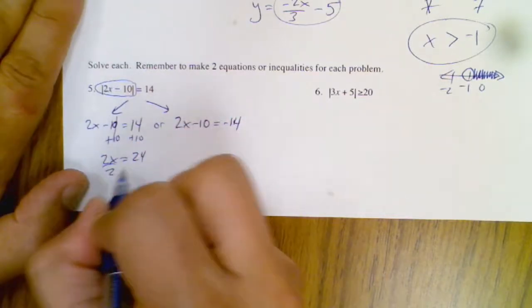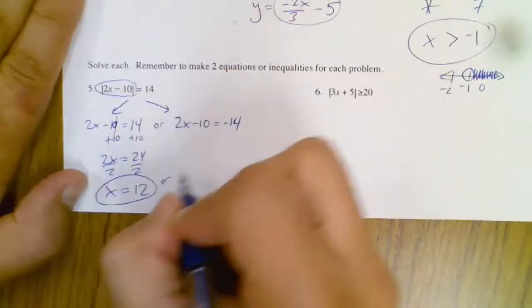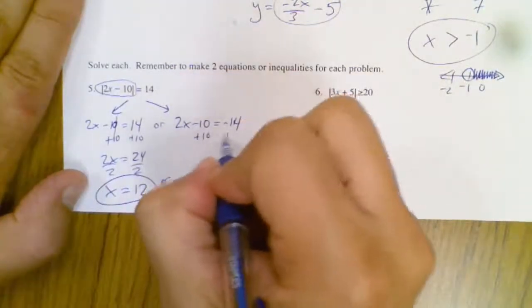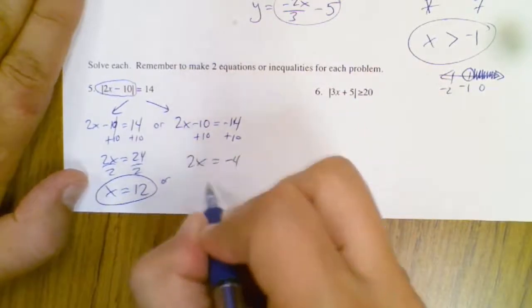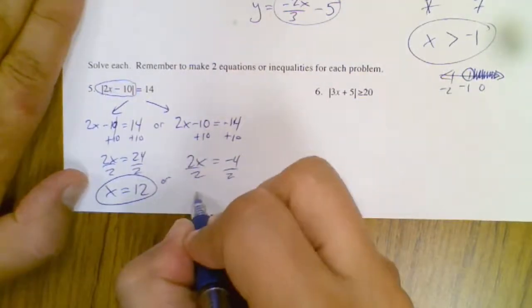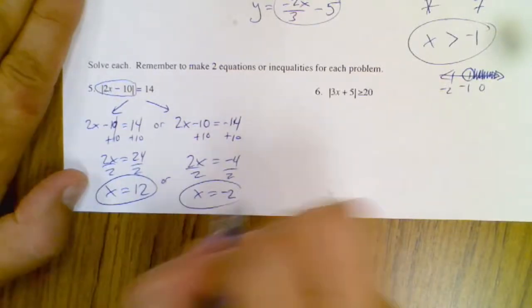Divide by 2, x is 12. Or I'm going to add 10, be careful when you do this one on this side because you get negative 4 divided by 2 and x is negative 2. There's two answers.